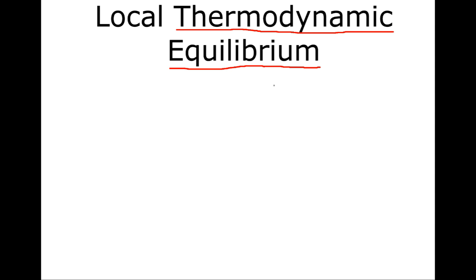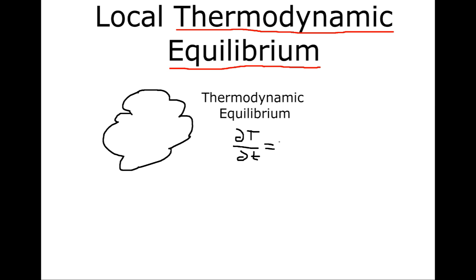Up to this point, you've probably seen in a variety of contexts a discussion of thermodynamic equilibrium. Thermodynamic equilibrium is the idea that you've achieved a uniform temperature in a medium. For example, assume we had some cloud. If this cloud were in total thermodynamic equilibrium, it would have to be completely the same temperature, and that temperature should not be changing with time. So thermodynamic equilibrium means that the derivative of temperature with respect to time is equal to the spatial gradient of the temperature, which is equal to zero. And we can represent this by saying that this entire cloud is a uniform temperature.